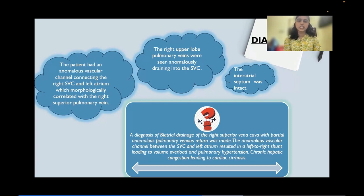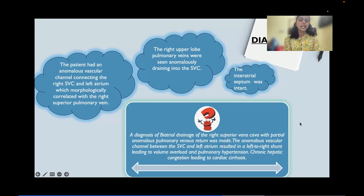Summarizing the imaging findings: the patient had an anomalous vascular channel connecting the right SVC and the left atrium, whose morphology correlated with the right upper lobe pulmonary vein. However, the right upper lobe pulmonary veins were seen anomalously draining into the superior vena cava, and the interatrial septum was intact. A diagnosis of biatrial drainage of the right superior vena cava with partial anomalous pulmonary venous return was made. This anomalous channel resulted in a left-to-right shunt causing volume overload, significant pulmonary hypertension, and chronic hepatic congestion leading to cardiac cirrhosis.